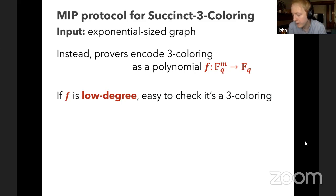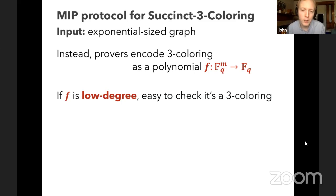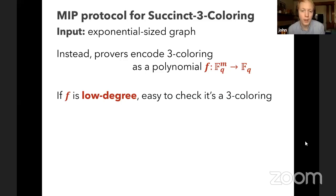Why would you encode a three coloring with a polynomial? If you're not able to read the entire three coloring, one idea is to pick a vertex u and vertex v in the graph, look at the coloring on those two vertices, and check that the edge is properly colored. The issue is: if the three coloring is improper and violates only a single edge, the graph is exponentially large, so the odds of correctly picking that one edge are very small.